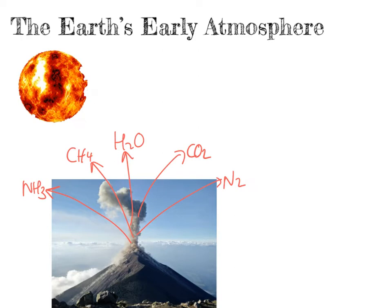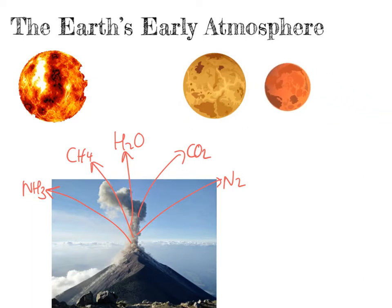We can describe the Earth's early atmosphere as being somewhat like the current atmosphere on Venus or on Mars. That's important because in your exam, the examiner may ask you about the atmosphere on Venus or Mars compared to Earth. They are not expecting you to know much about these planets' atmospheres, apart from the fact that it is similar to the Earth's early atmosphere. They're likely to give you some data, or may just say it's very similar to the Earth's early atmosphere, so you need to apply your knowledge of the Earth's early atmosphere to those questions.